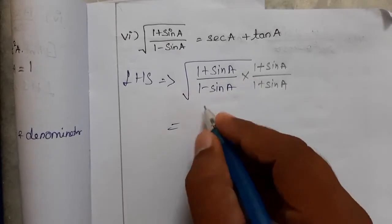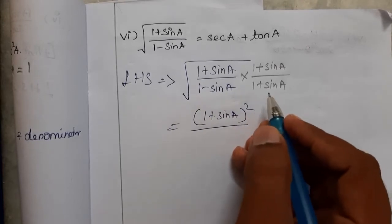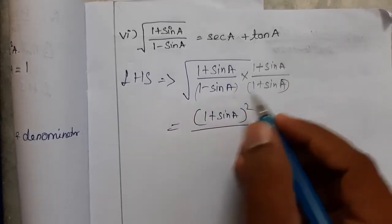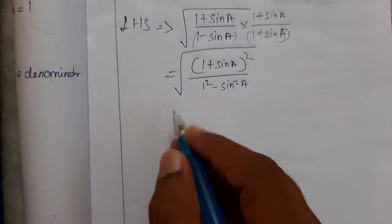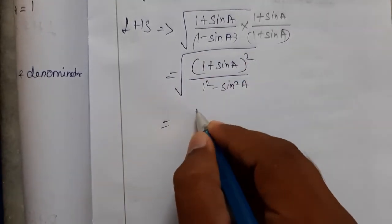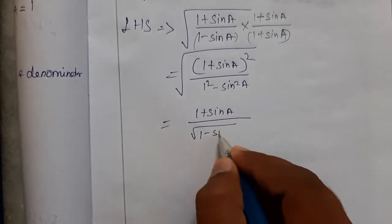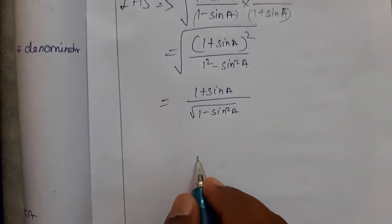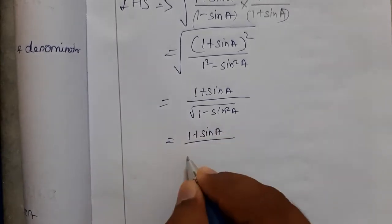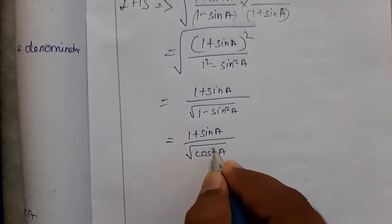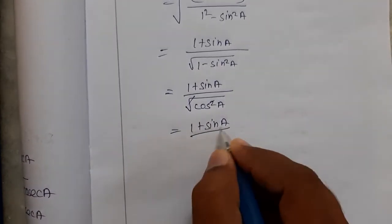The numerator becomes 1 plus sin A whole squared, and the denominator becomes 1 minus sin A times 1 plus sin A, which is the a minus b into a plus b form. So denominator equals 1 minus sin squared A. Taking the square root, the numerator square root cancels to give 1 plus sin A, and denominator becomes square root of cos squared A, which is cos A.